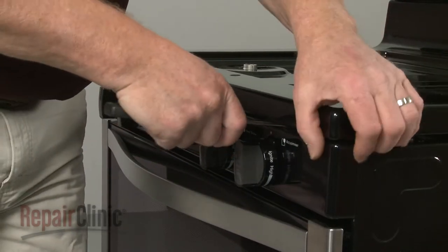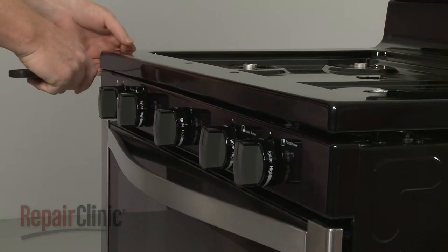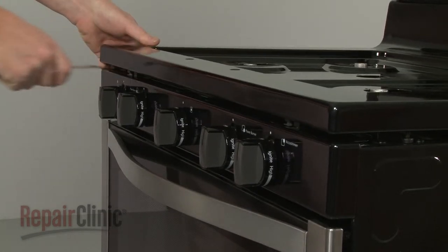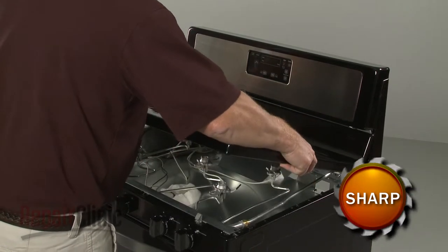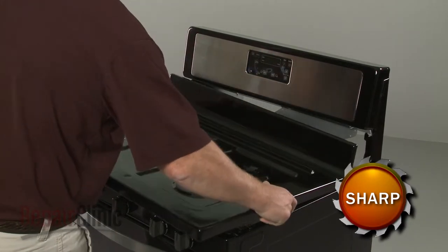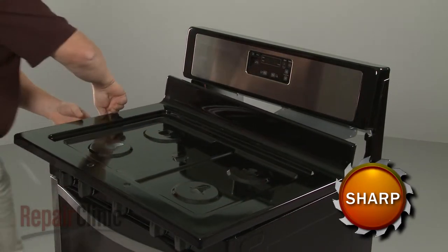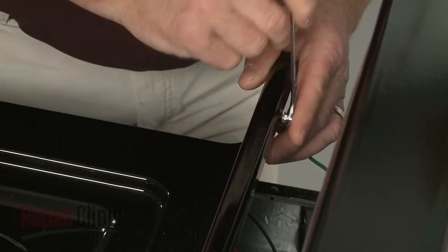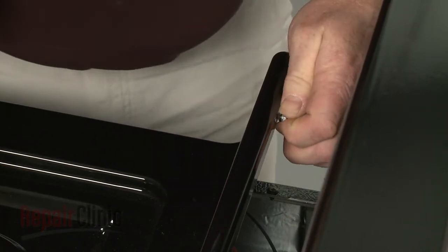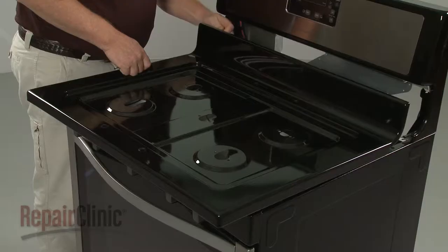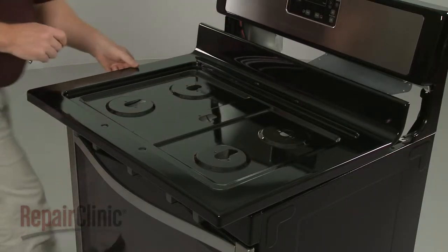Now insert a putty knife under the main top to release the retaining clips. Detach the main top and use a quarter-inch wrench to unthread the screw to release the grounding wire. You can now set the main top aside.